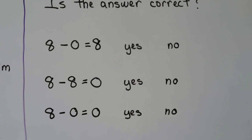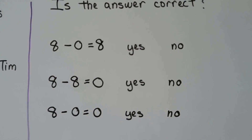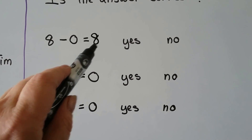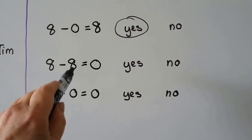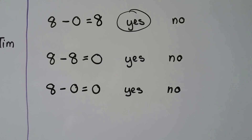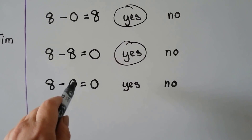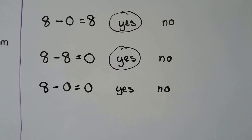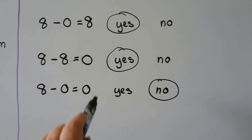Is the answer correct? Eight minus zero is equal to eight — when you subtract zero from a number, the number stays the same. Yes, this is correct. Eight minus eight equals zero — when we subtract all, is the answer zero? Yes. Eight minus zero equals zero — when you have eight and take zero away, is it equal to zero? No. When we subtract zero, the number stays the same — it equals eight.